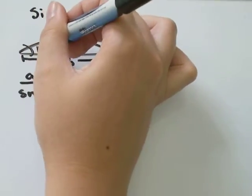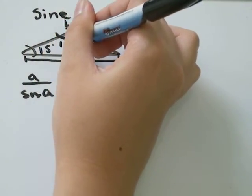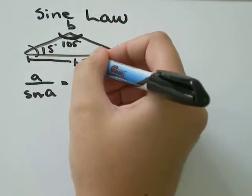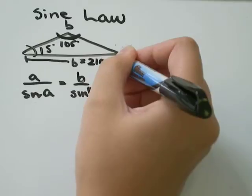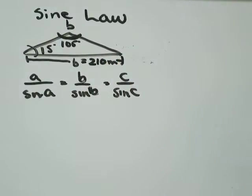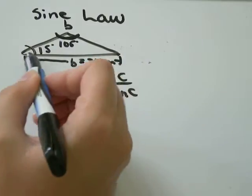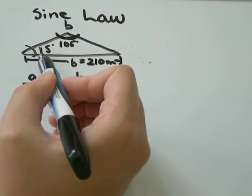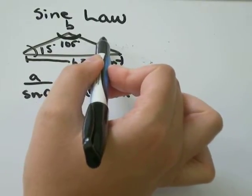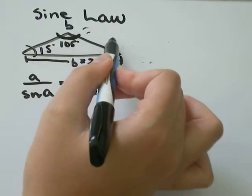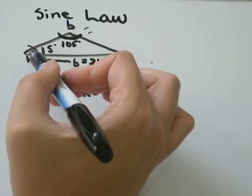We have a 15 degree angle in here, a 105 degree angle up here, and we know that B equals 210 meters. You know you're using the sine law as opposed to the cosine law when you have a triangle where you know an angle and the length opposite to it, another angle, and you're asked to find another length. Or you know an angle, the length opposite to it, the length of another side, and are asked to find the angle opposite to that.